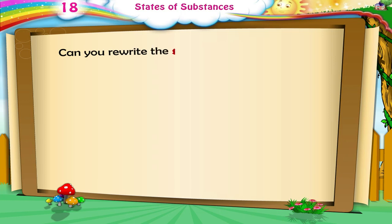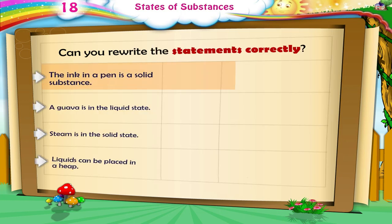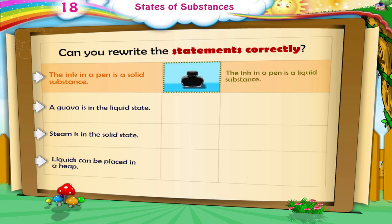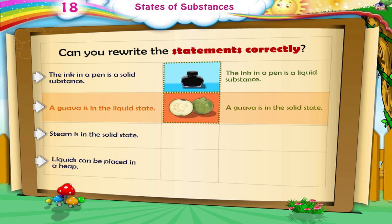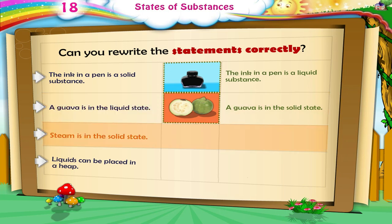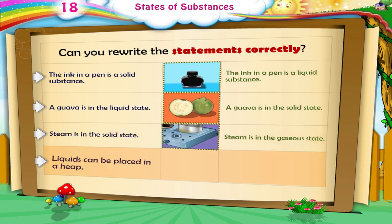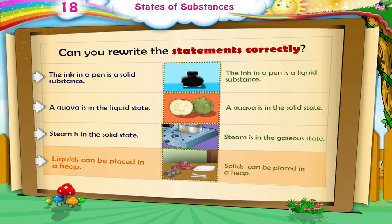Can you rewrite the statements correctly? 'The ink in a pen is a solid substance' — corrected: the ink in a pen is a liquid substance. 'A coal is in the liquid state' — corrected: coal is in the solid state. 'Steam is in the solid state' — corrected: steam is in the gaseous state. 'Liquids can be placed in a heap' — corrected: solids can be placed in a heap.